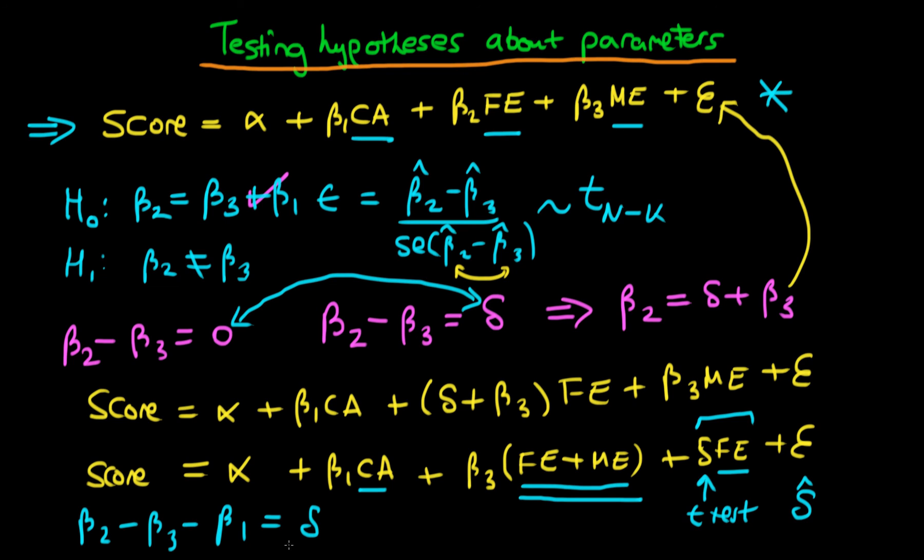And then we just do a t-test on one particular variable or one particular coefficient on a variable within our model. So this idea is easily extendable to circumstances where we have a linear combination of more than just two parameters. However, this method doesn't work necessarily if we have more than one linear hypothesis about parameters, and that's what the next video is going to be about. I'll see you then.